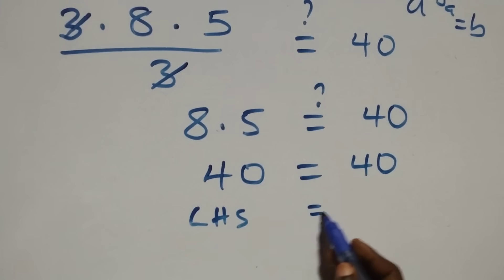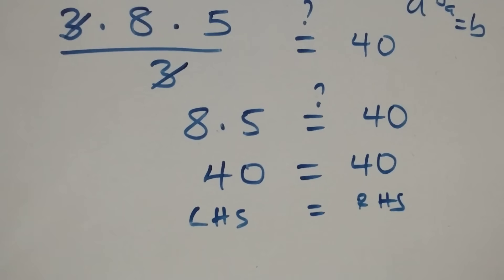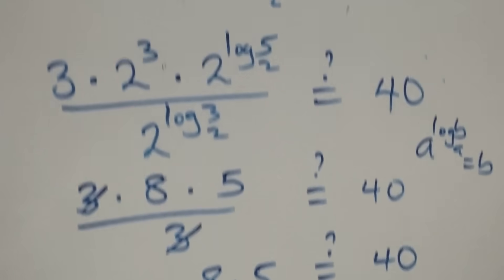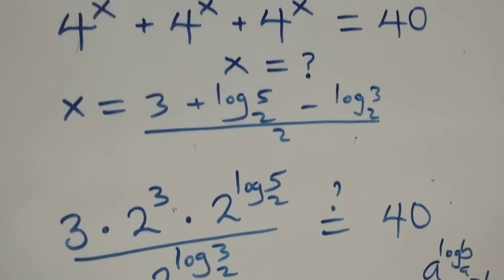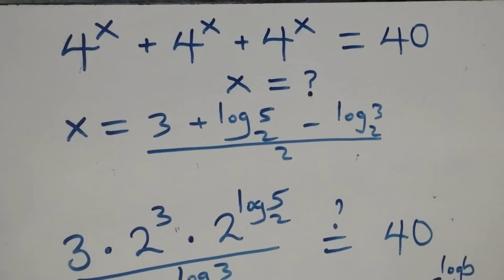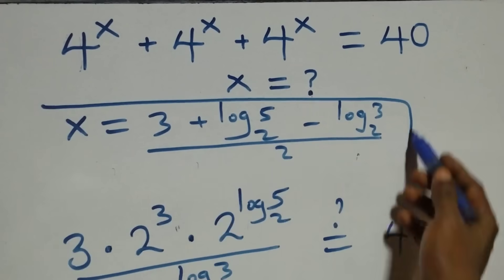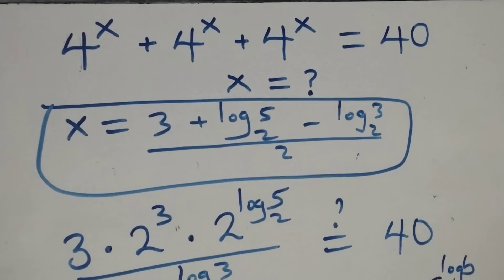Left hand side equals to the right hand side. And therefore, we conclude that x equals to (3 + log₂5 − log₂3) all over 2 satisfies the given problem. See you in the next class. Bye.